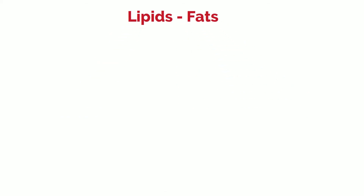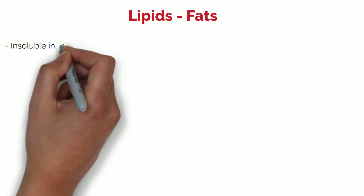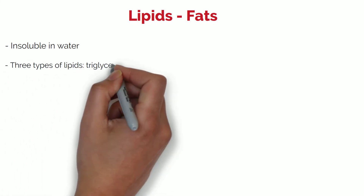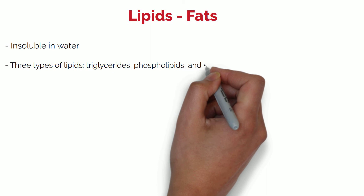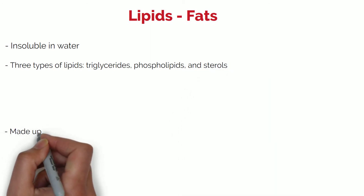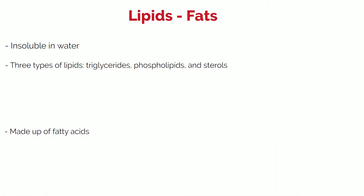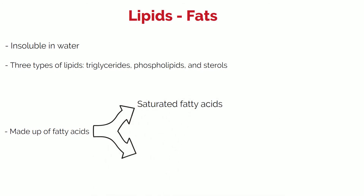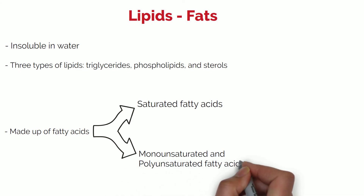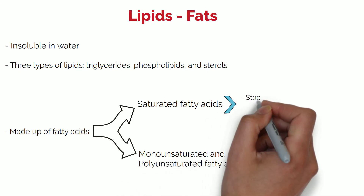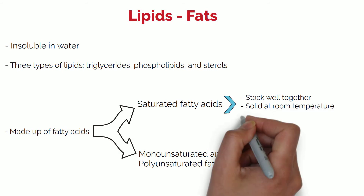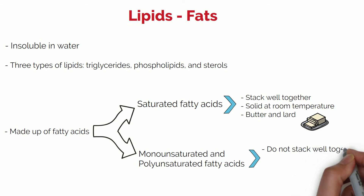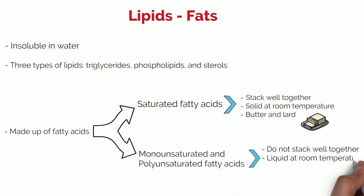Finally, we have the lipids, or fats. These are insoluble in water, hence the common saying oil and water don't mix. There are three types of lipids: triglycerides, phospholipids and sterols. Lipids are made up of fatty acids and these can be divided into two categories: saturated fatty acids, and monounsaturated and polyunsaturated fatty acids. The former stack well together and are solid at room temperature, such as butter and lard. The latter do not stack well together and are liquid at room temperature, such as oils.